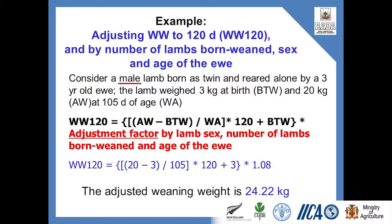After that, I project to 90 days or 120 days — asking: if my animal was gaining weight for that period, what will the final weight be? I also have to add back the birth weight, because all I calculated was how much the animal gained after birth. Once I add the birth weight back, I get the final adjusted weight of my animal at 90 or 120 days.